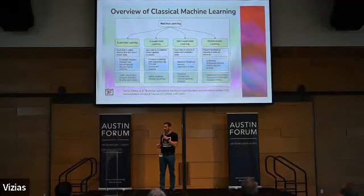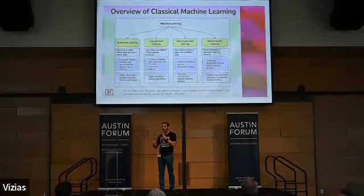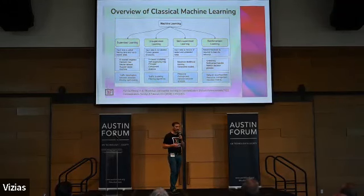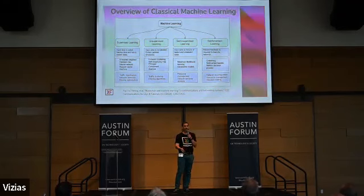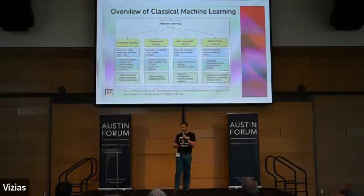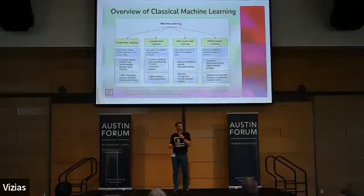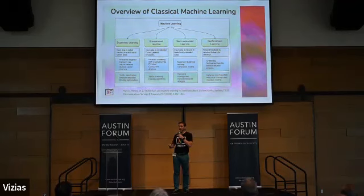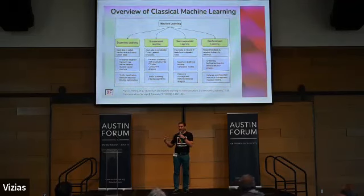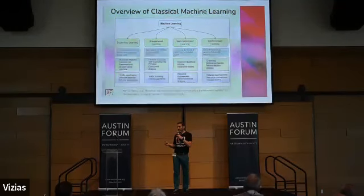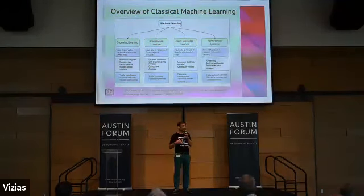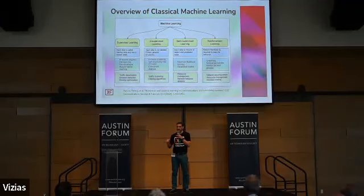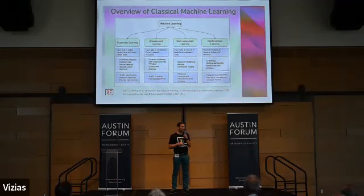Unsupervised learning is basically trying to discover patterns just by looking at a set of data where we don't have any information about it — trying to extract clusters of information or find trends or similarities. Semi-supervised is kind of both of those put together: we have some labeled examples and a lot of typically unlabeled data, but we want to try to use those together at the same time.